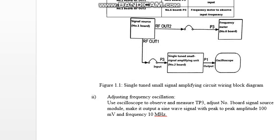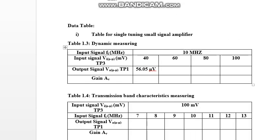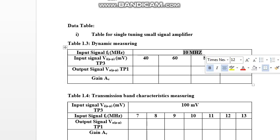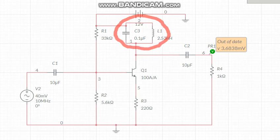Going back to the basics: the single tuned amplifier circuit using a block diagram. Looking at the study parameters table, we have to vary the input voltage at the TP3 portion — 40 millivolt, 60 millivolt, 80 millivolt, and 100 millivolt — four variations of input signal. The input signal frequency remains the same at 10 megahertz throughout.